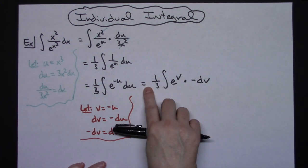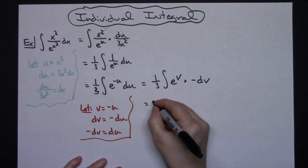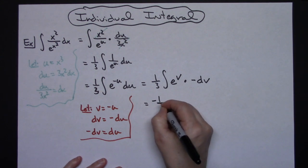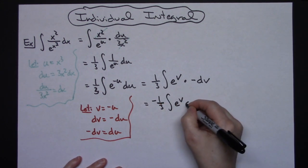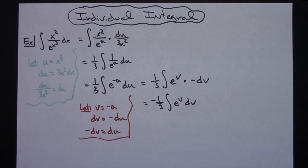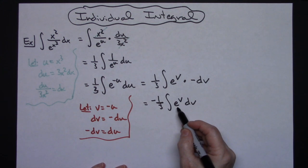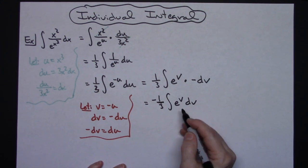What that's going to do is that's going to allow me to pull out the negative out in front. So I'll have negative 1 third integral of e to the v dv. Now I am finally to some place where I can actually integrate this. That's just going to be a straight e to the v.